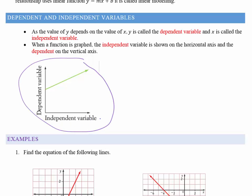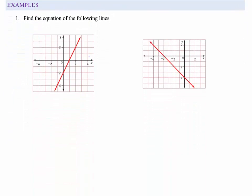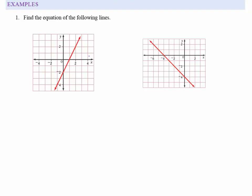The independent variable is always x and always goes along the bottom of the graph. The dependent variable is y, or whatever letter we use, and it always goes along the y-axis. Now let's look at an example — the first thing we need to do is find the equation of a line.